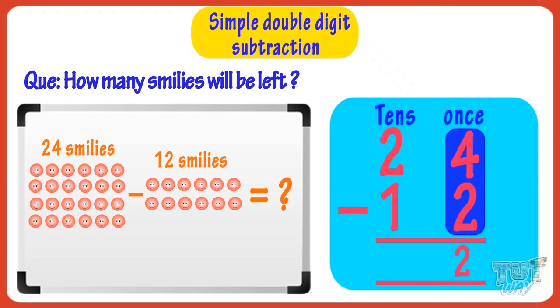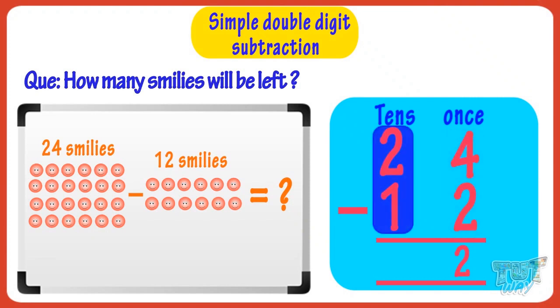Now subtract 1 from 2. You get 1 and write it at the tens place. Good! So we got 24 minus 12 equals 12. So 12 smileys will be left. Good!